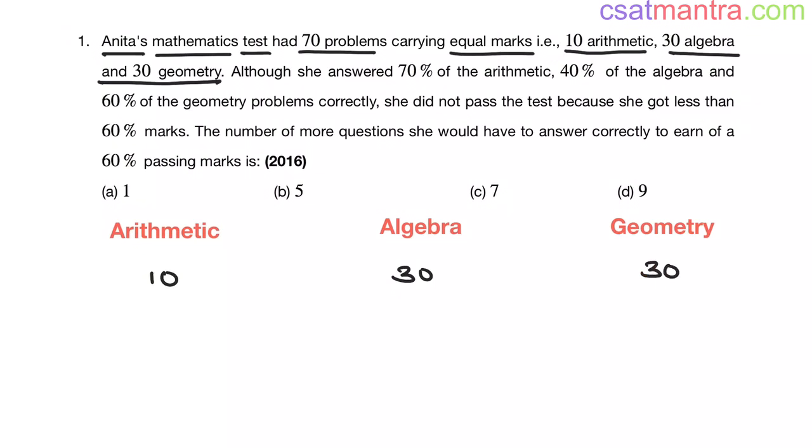Although she answered 70% of the arithmetic, 70% of 10 is 70 by 100 into 10. Zeros cancel out, this is equal to 7. That means she has answered 7 questions.